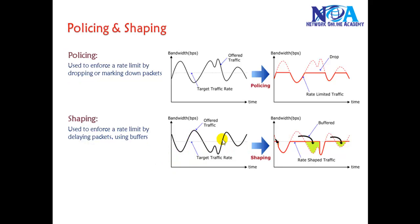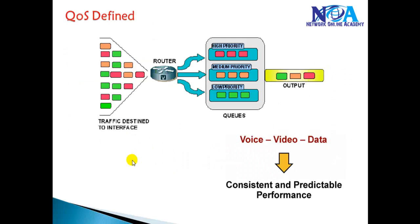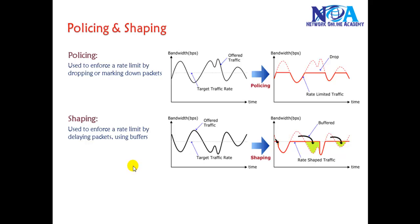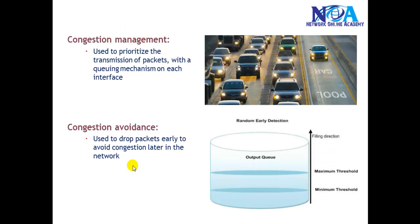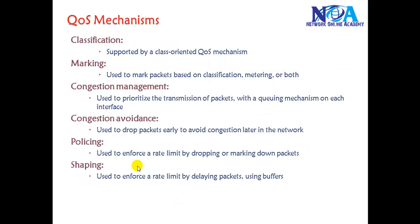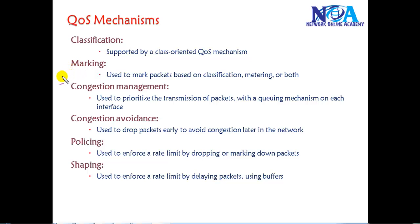That's what we call traffic shaping. We'll talk about this more in detail in separate sections. In this section, we are just giving an introduction to the different QoS mechanisms available, which ensure that high-priority traffic always gets forwarded. If the network gets congested, low-priority and high-priority traffic must be differentiated and appropriate preference given.